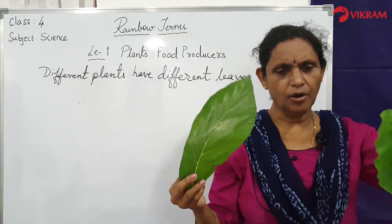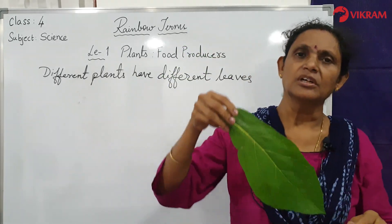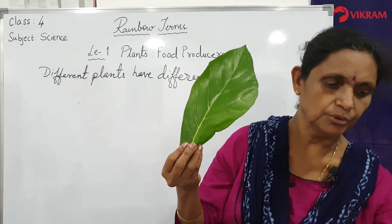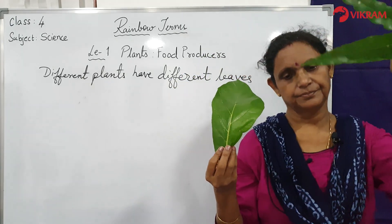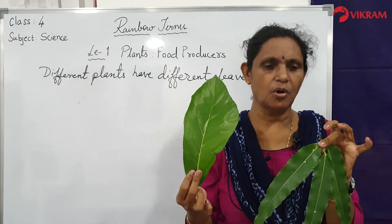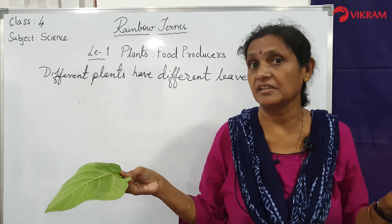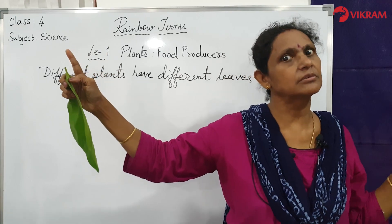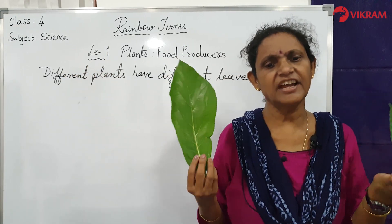Leaves may be present in many shapes. Some will be round, some will be oval, some will be feathery. In size also, some will be very long and some will be very small. They can be from 15 to 18 millimeters long. Some trees like coconut and palm trees have very very long leaves, and banana leaves are also very long.